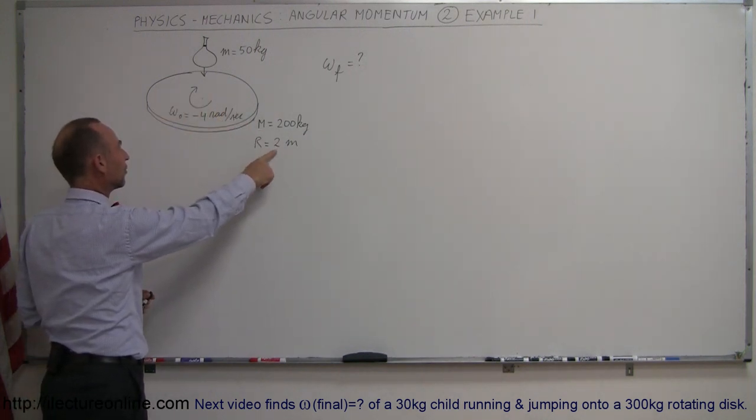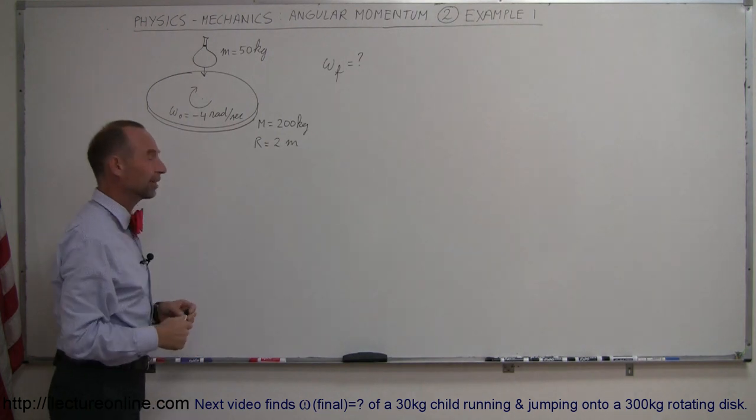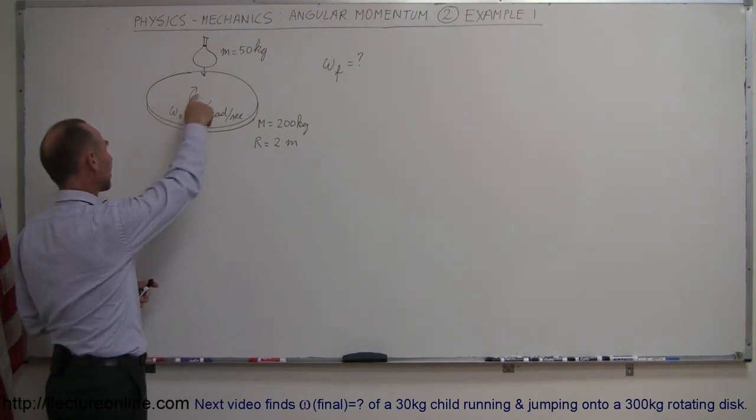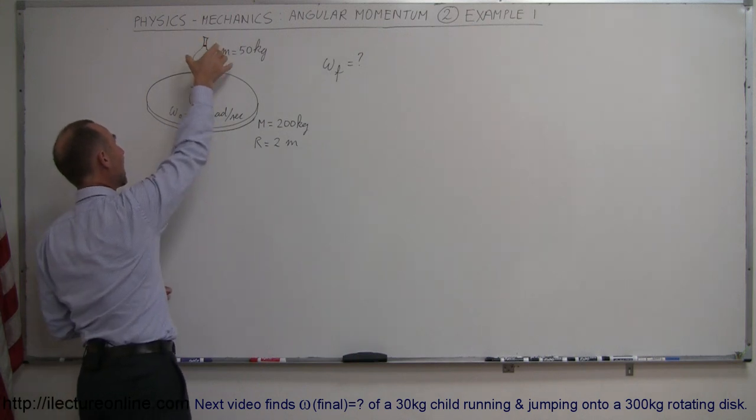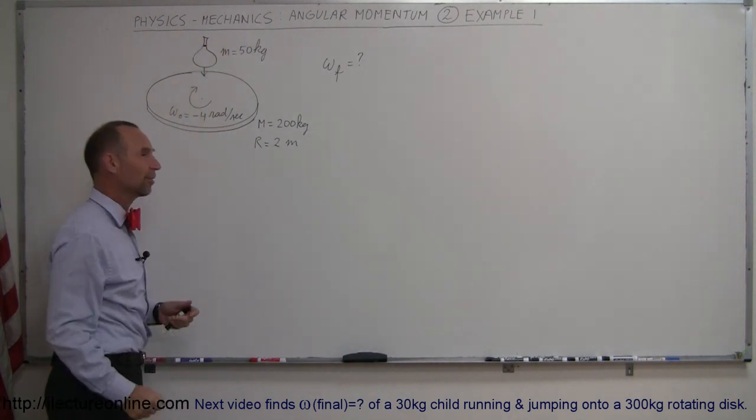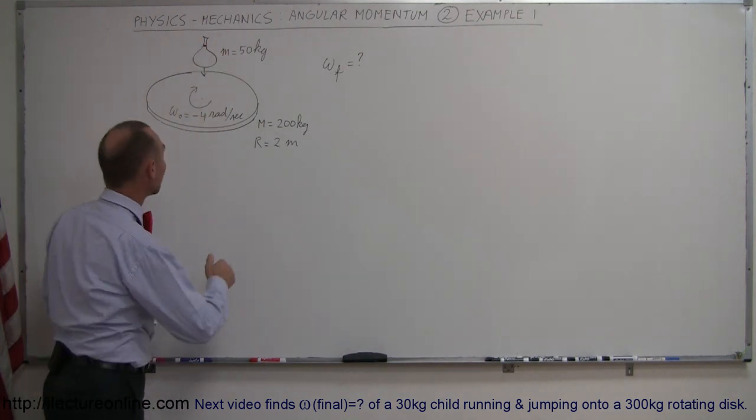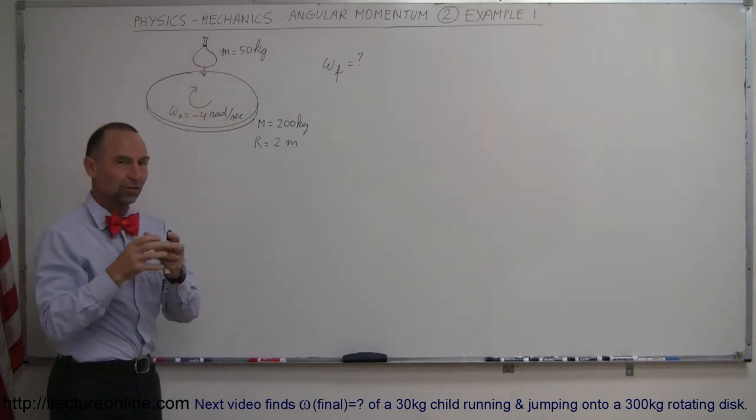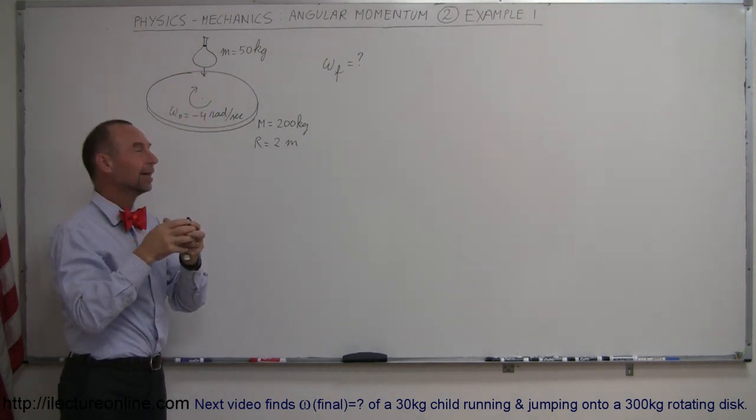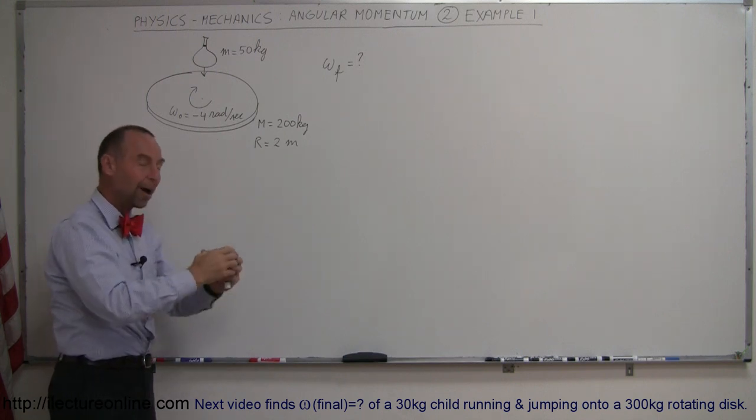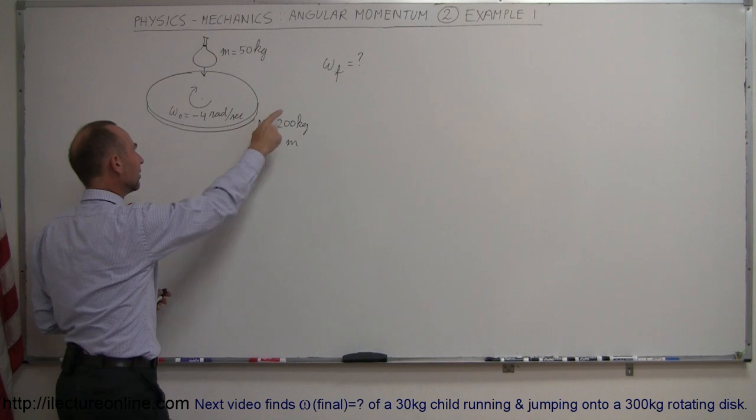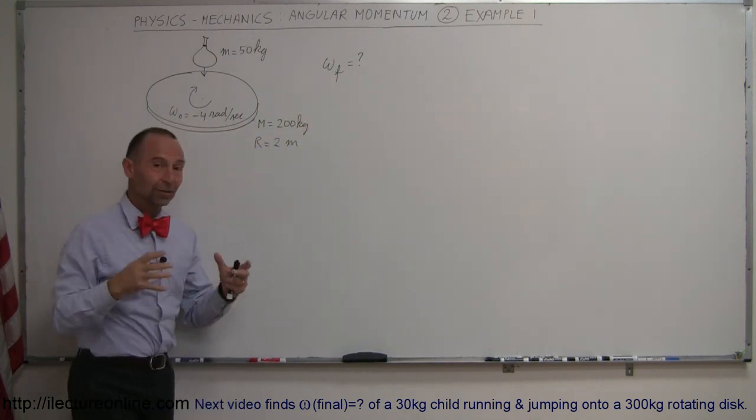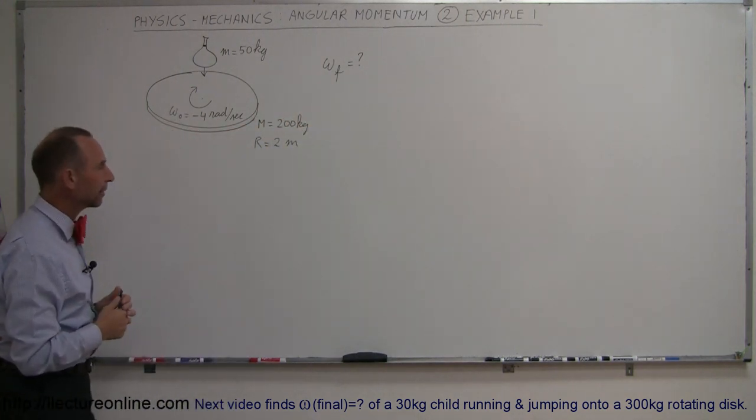A rotating disc has a radius of 2 meters, a mass of 200 kilograms. It's rotating in a clockwise direction at 4 radians per second. We're going to drop a bag of sand, 50 kilograms of sand, right on the edge of the disc. Notice the bag of sand is not moving in a rotational direction, simply gets dropped on top of the disc. As a result of that, what will be the final angular velocity of the disc and the bag of sand together?